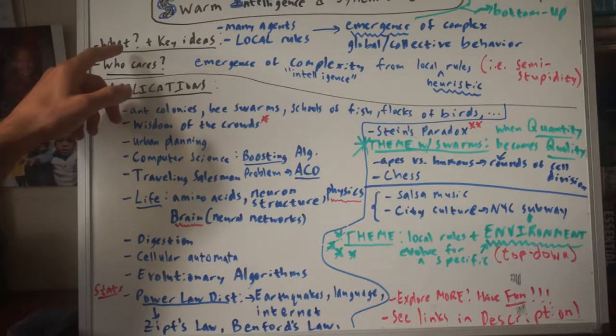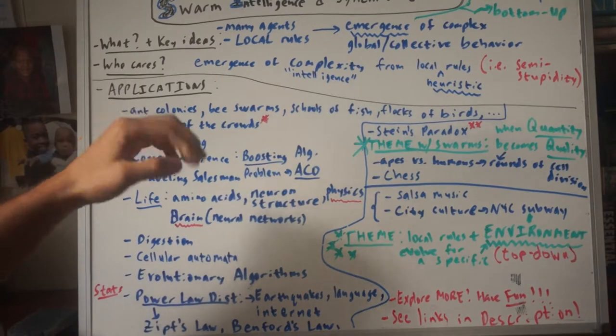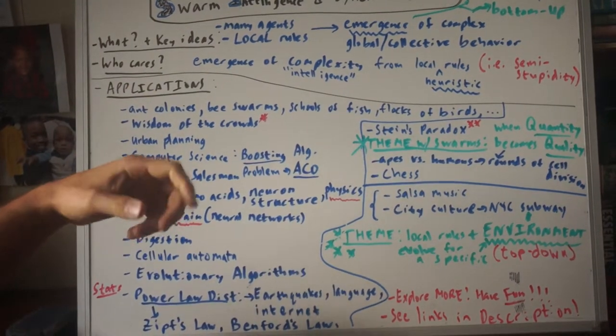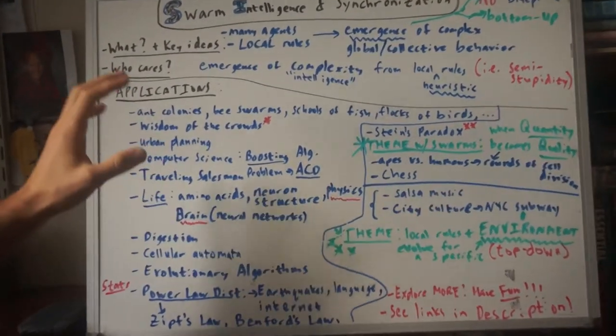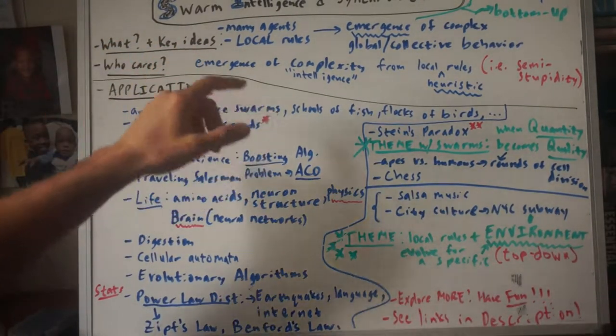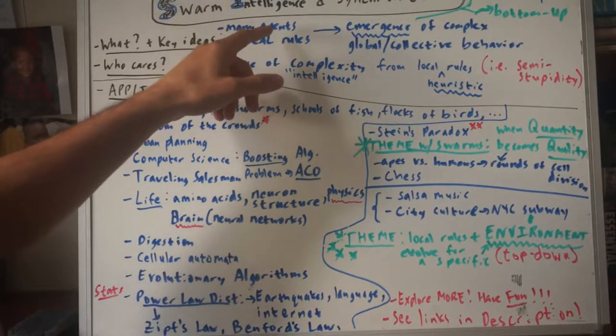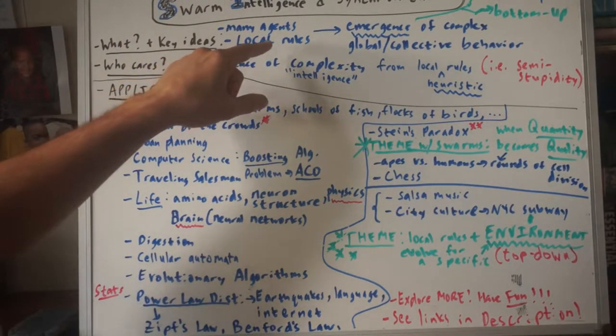Swarm intelligence can be defined as the collective behavior that emerges from decentralized and self-organizing units or agents. So let me unpack that. The key ideas to simplify: there's many agents. So this could be animals, this could be robots, it could be anything.